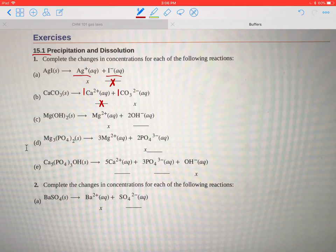For C, we have magnesium hydroxide solid forming magnesium ion and hydroxide ion. There's a 2 here, so there's twice as much hydroxide formed per magnesium. So we would write 2X on this side. All of these are positive here.